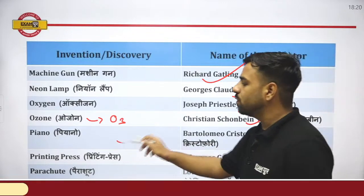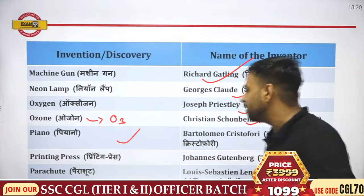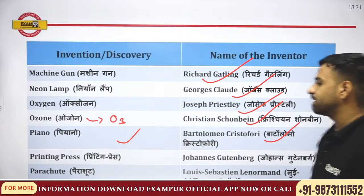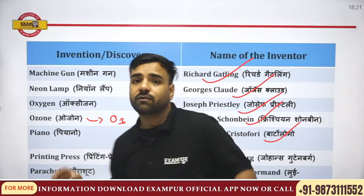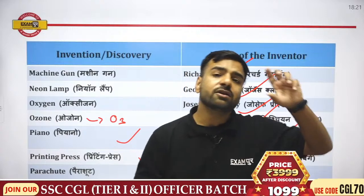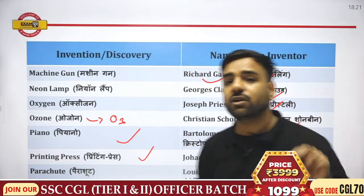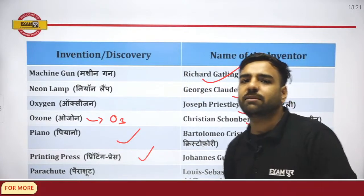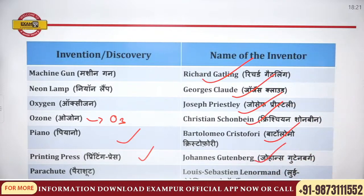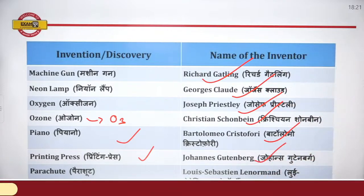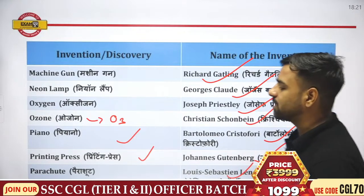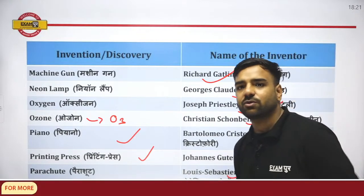Oxygen was discovered by Joseph Priestley — we studied this in chemistry. Ozone has the formula O₃ — it is the same ozone present in the layer outside the earth. Ozone was discovered by Christian Schönbein. Piano was discovered by Cristofori. Printing press, from which newspapers come, was discovered by Johannes Gutenberg. Parachute was discovered by Louis Sebastian.